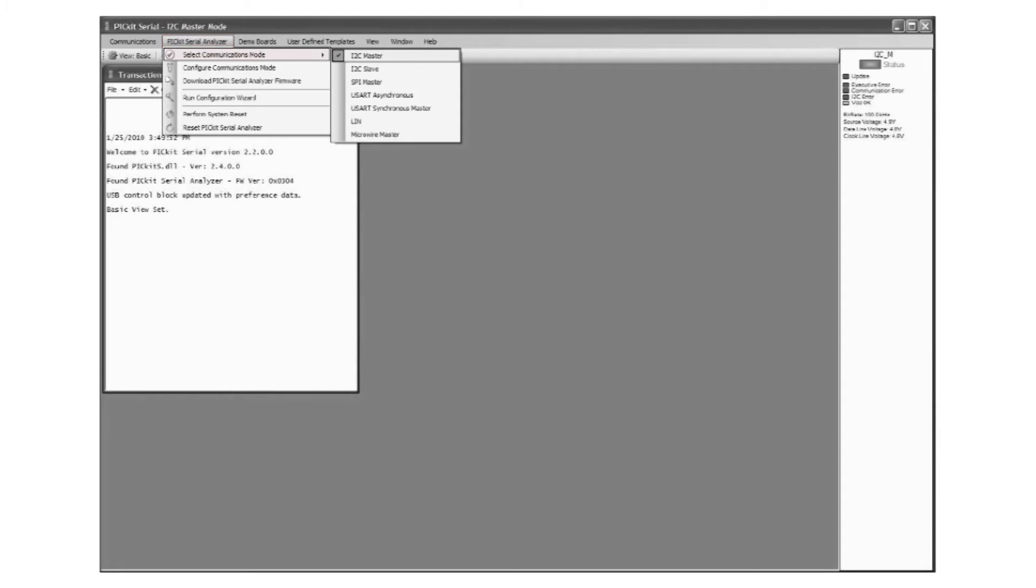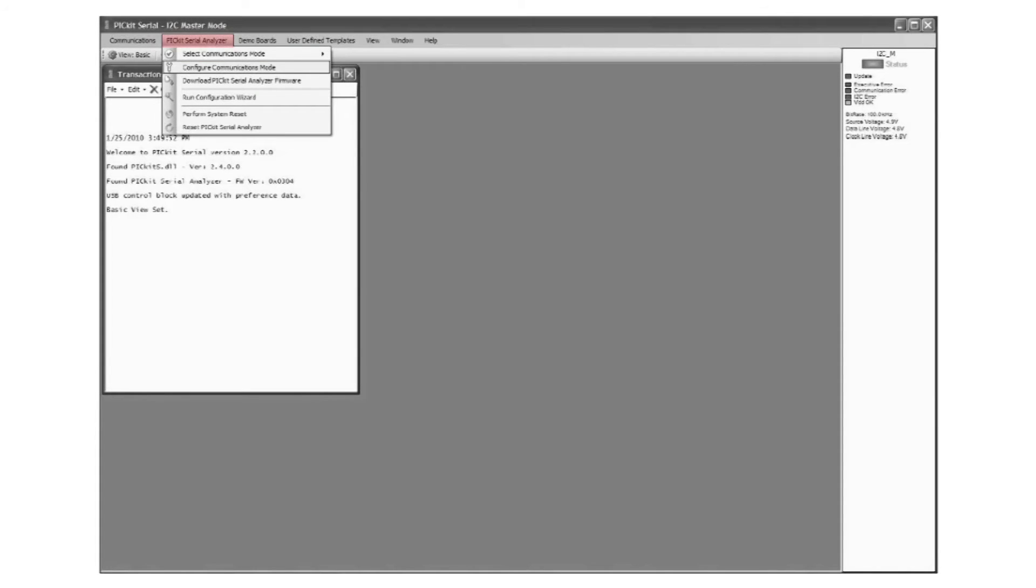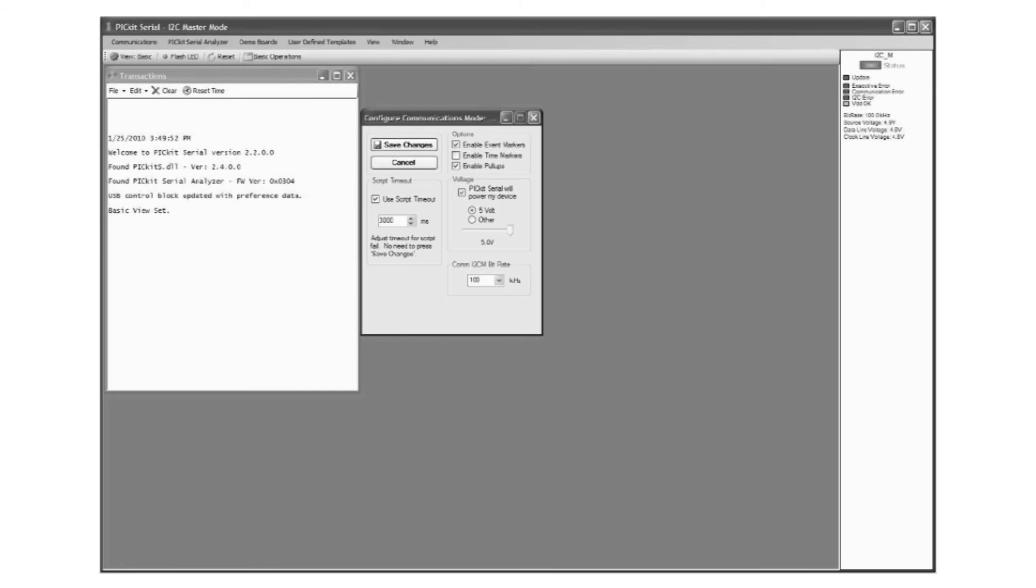From the drop down menu select communications mode, then select I2C master. Now click on PicKit serial analyzer tab again but this time select configure communications mode. This will open a new window. Ensure that you have the same configuration as what is on the screen and then click save changes.